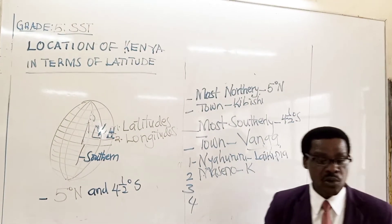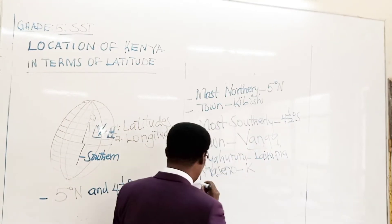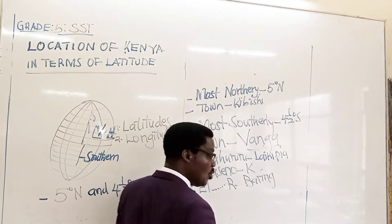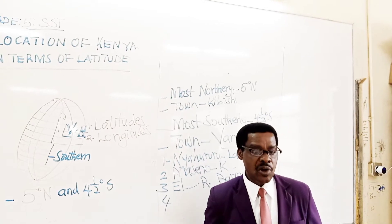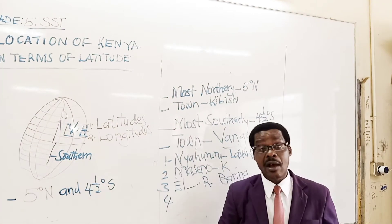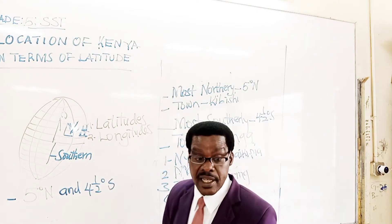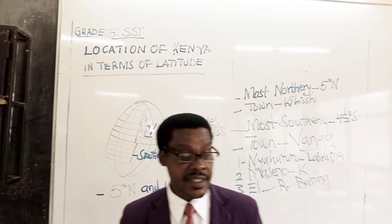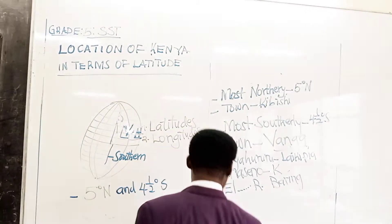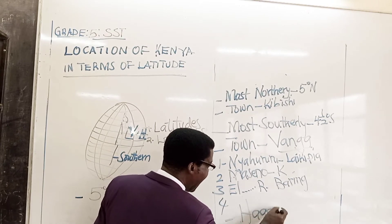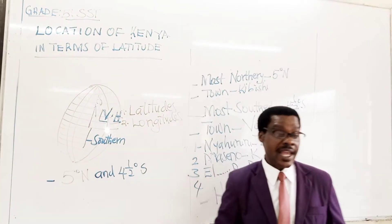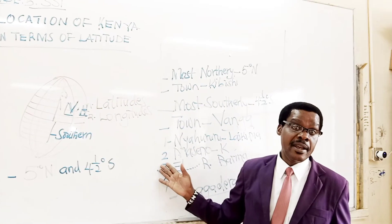We also have Endama Ravii in Baringo County. Then we have Nanyuki, also in Laikipia County. Another town where the equator passes through is Timorua, which is in Uasin Gishu County. We also have Meru in Meru County. We also have Agadera town, which is found in Garissa County. And last but not least, we have a town in Isiolo County. These are some of the towns where the equator passes through.